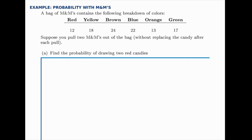Here we're going to find the probability of several different events using a bag of M&Ms. We've got a breakdown of colors with the numbers listed of each color, and we're going to pull two M&Ms out of the bag without replacing the candy. Each experiment we'll pull one M&M out, hold it out, and then reach in and pull out a second one randomly. Then we'll reset the bag before the next experiment, so each part of this problem we'll assume we're starting with the same distribution of colors given.